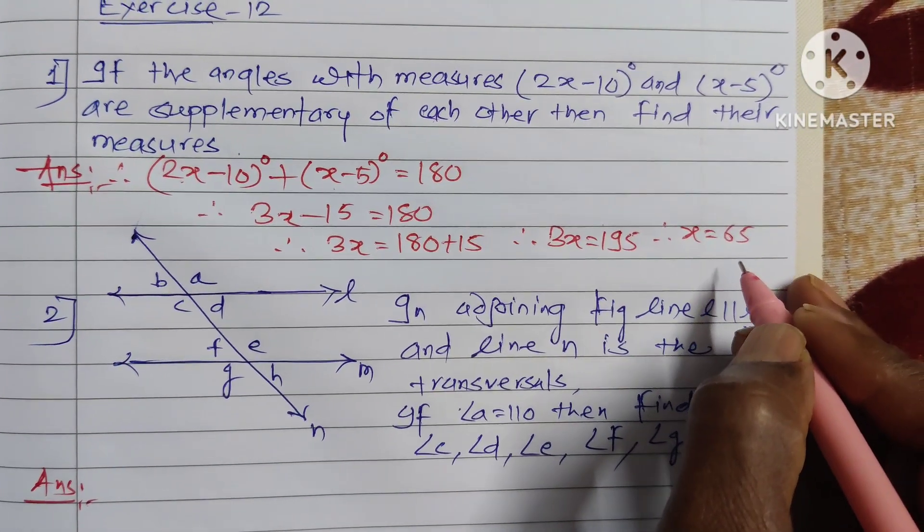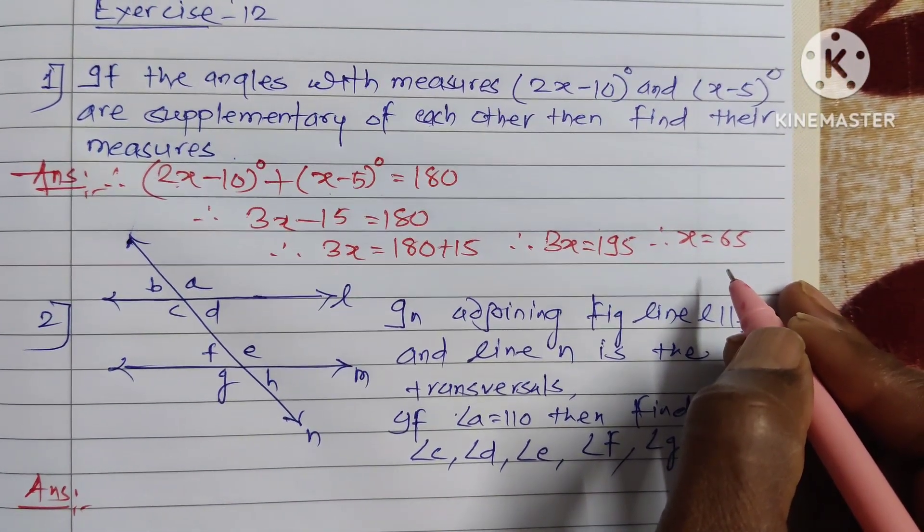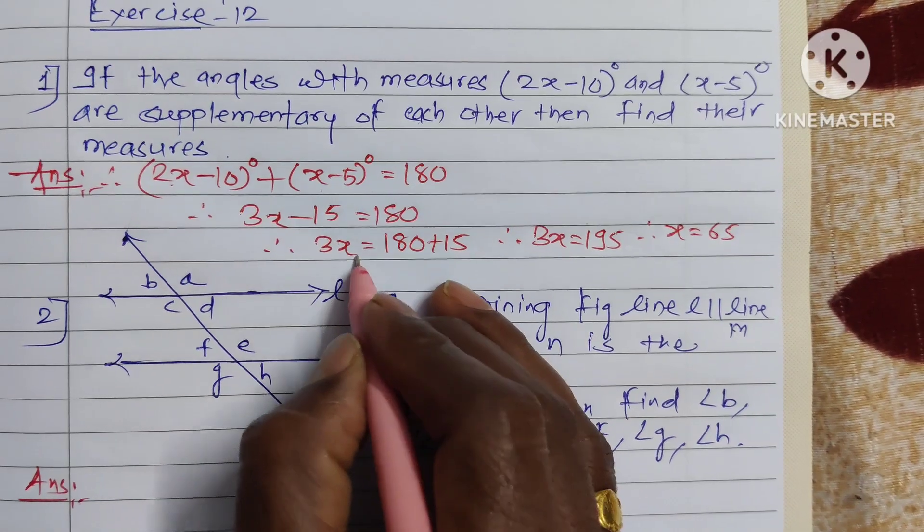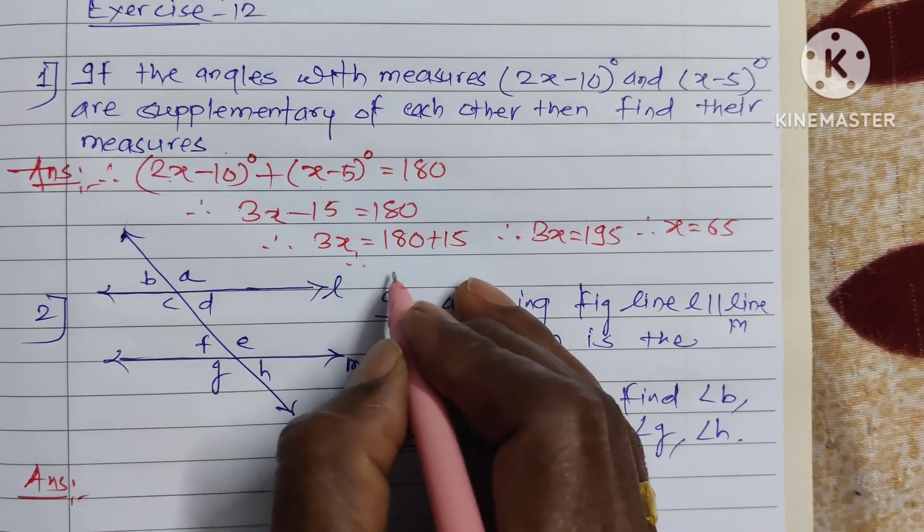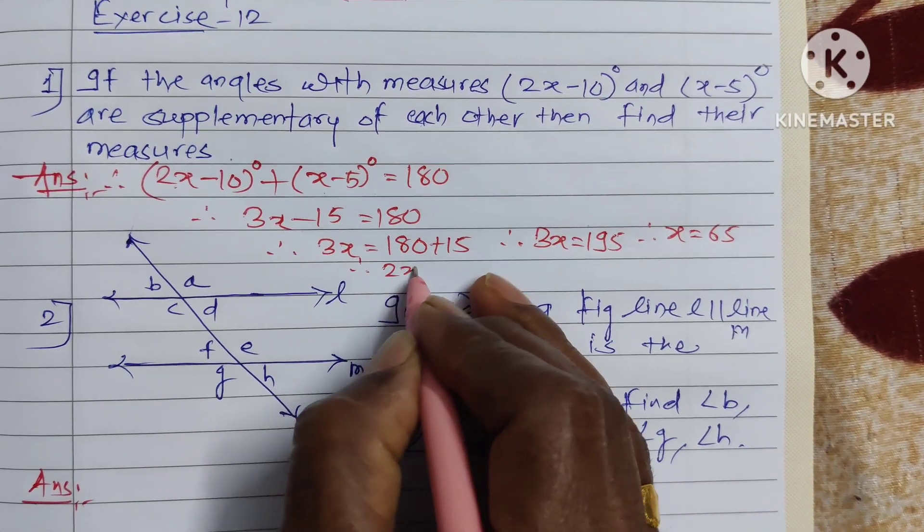Therefore x equal to 65. Therefore the measure of first angle equal to 2x minus 10.